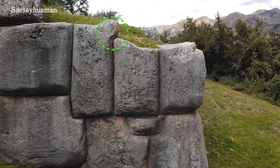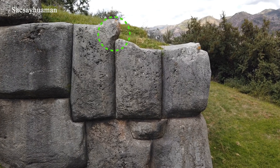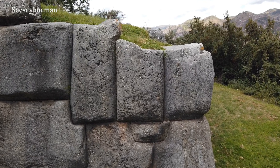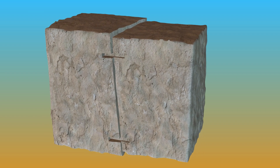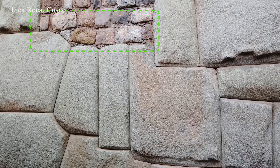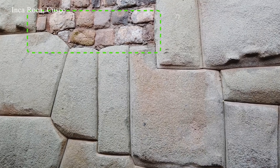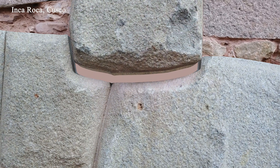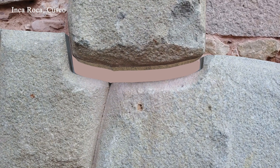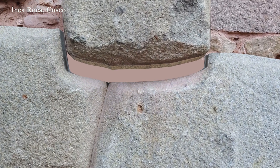If a block were made separately from the masonry using a surface transfer method, there would be no need for bevels. To precisely match two finished surfaces, a few control points would be enough — there is no requirement for a long, continuous bevel. Therefore, bevels cannot be associated with facilitating block alignment. This means the bevel appears as a byproduct of the joining process itself, and the joining was performed not by a sequential method of separately finishing surfaces, but by a parallel one, eliminating the need for repeated fitting and repositioning.